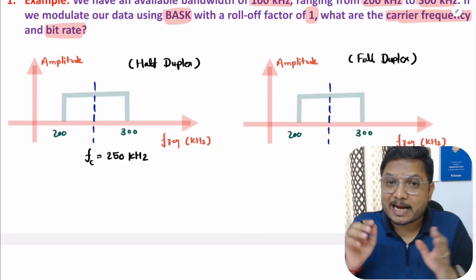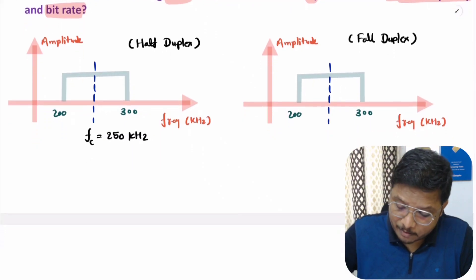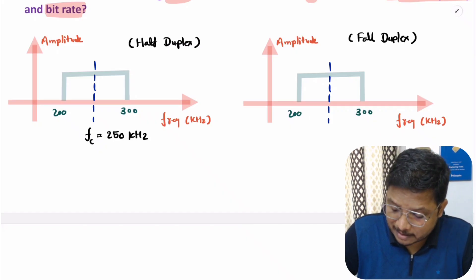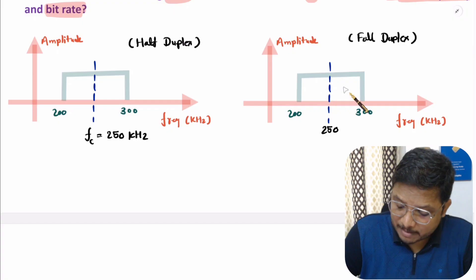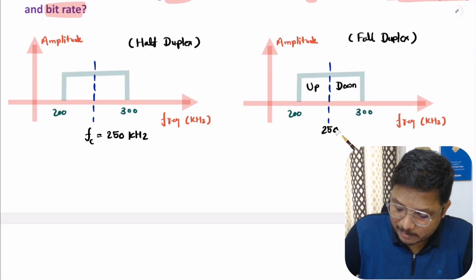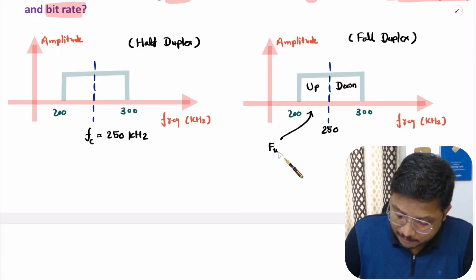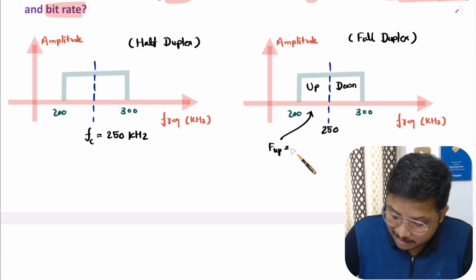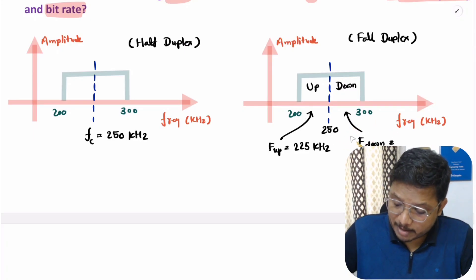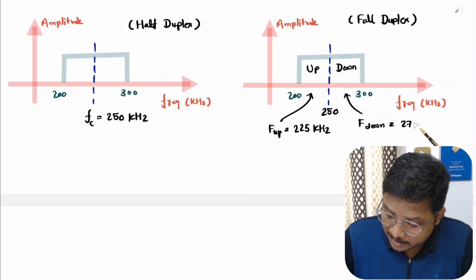In full duplex, the complete bandwidth is divided into two parts. We have a bandwidth of 100 kilohertz ranging from 200 kilohertz to 300 kilohertz, and we bisect it into two segments. One is uplink from 200 to 250 kilohertz and second is downlink from 250 to 300 kilohertz. So for uplink communication, carrier frequency will be 250 plus 200 divided by 2, giving 225 kilohertz, and for downlink it will be 275 kilohertz.